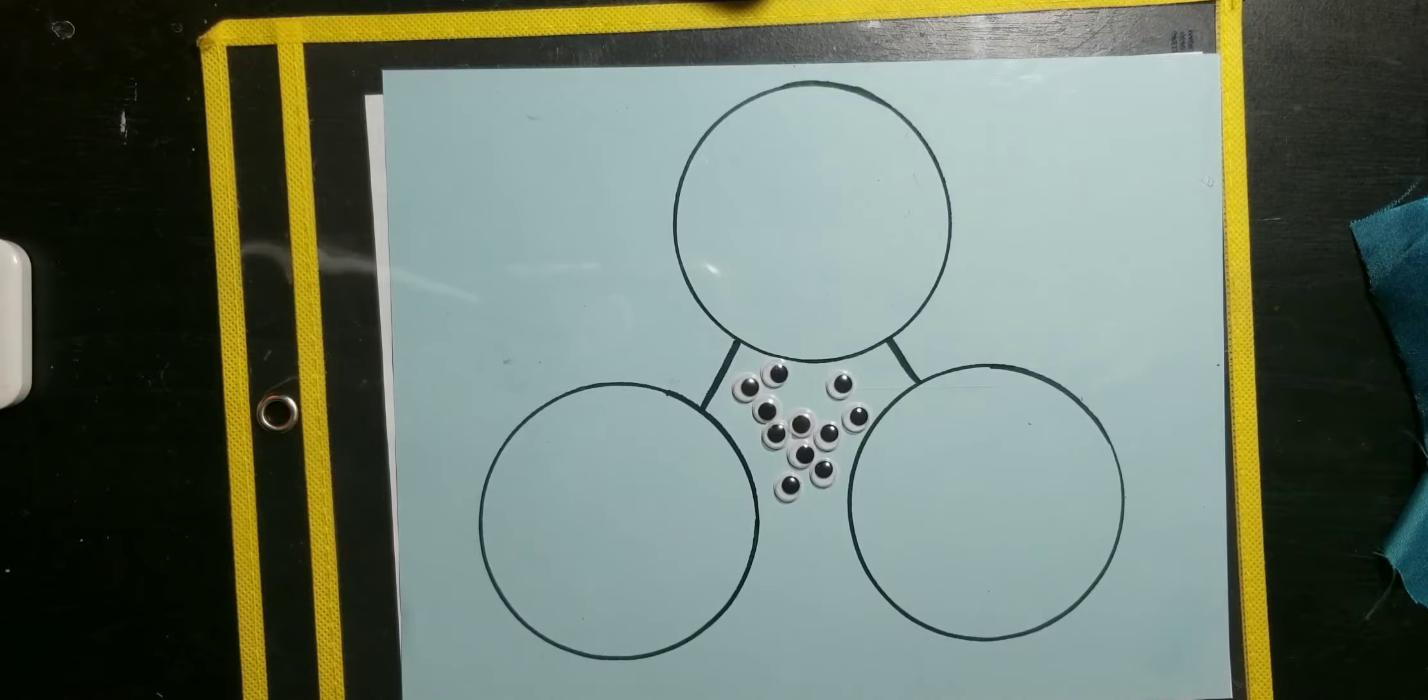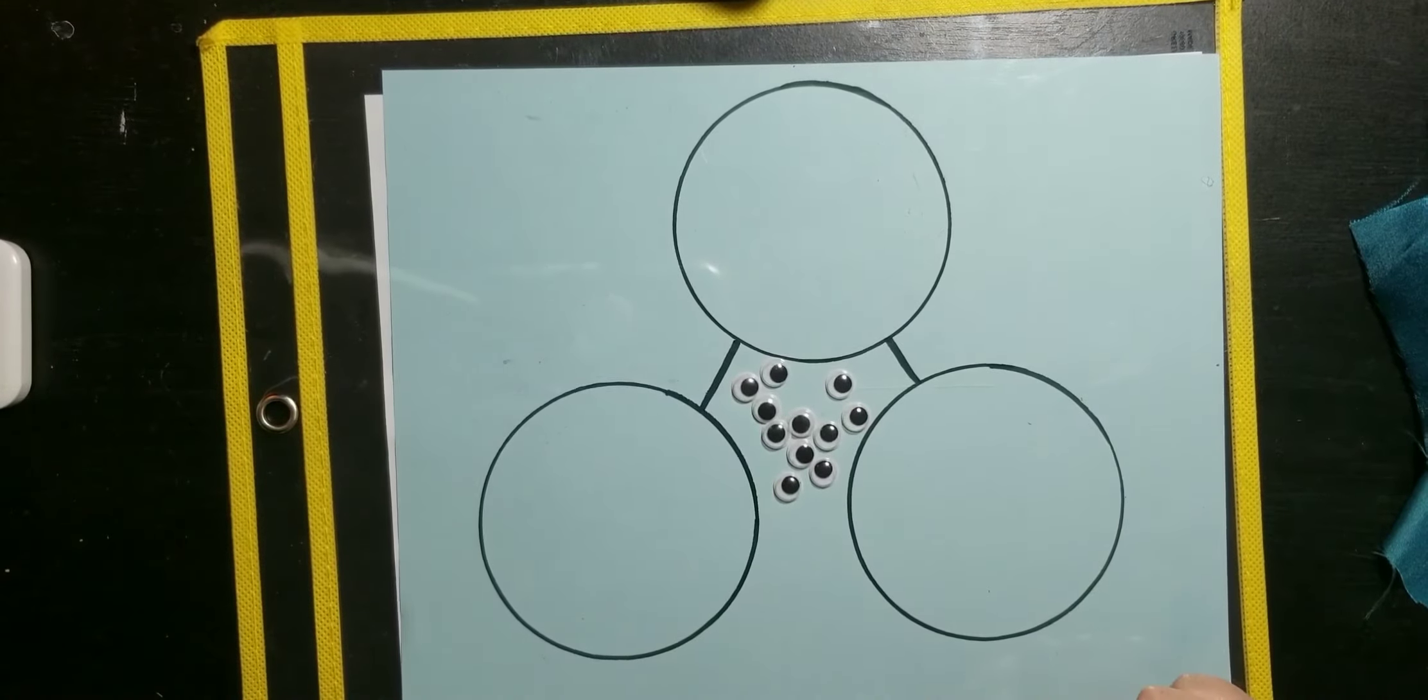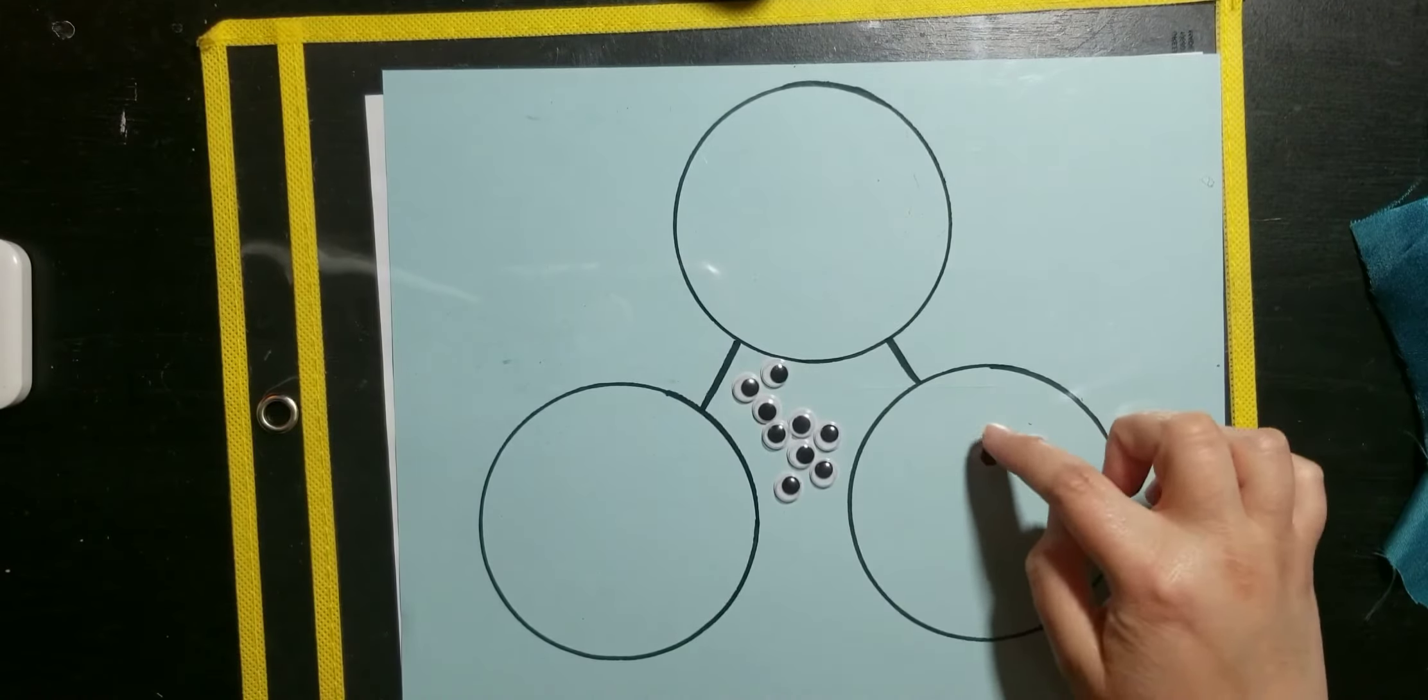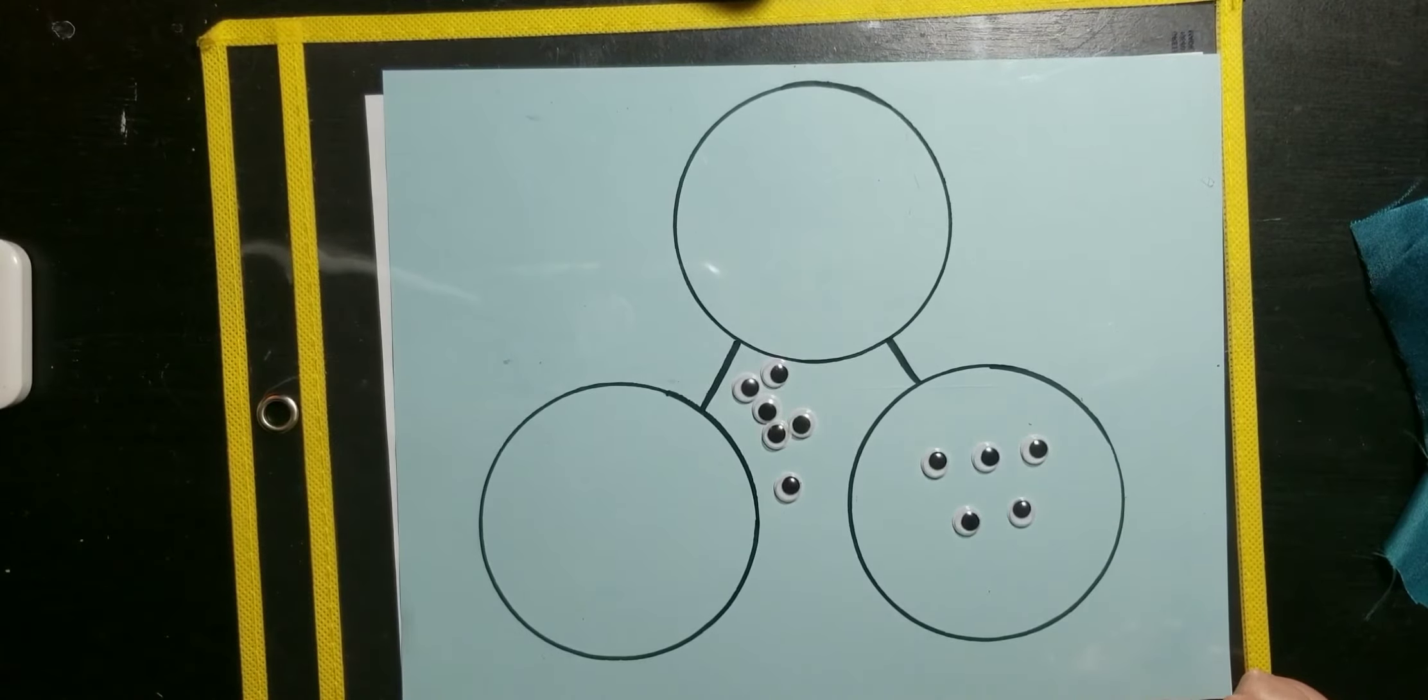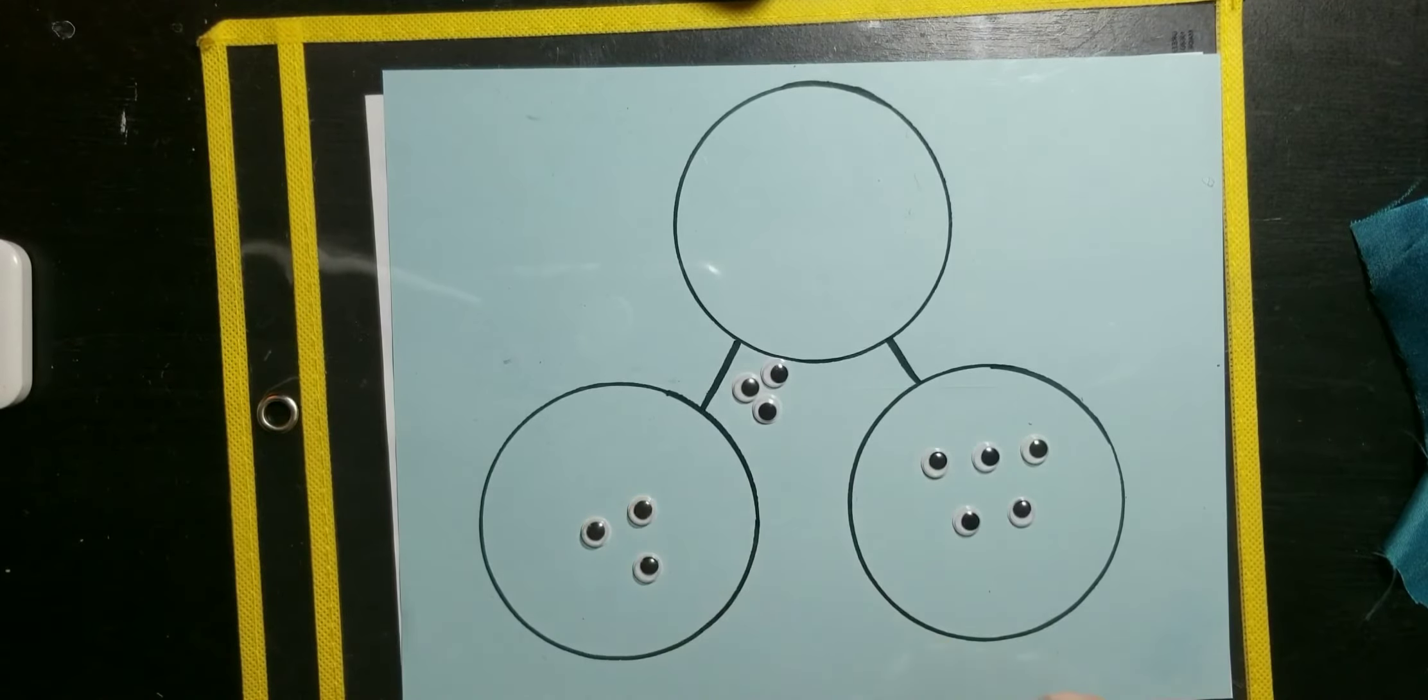Alright, I'm going to say the story problem again. And this time, we're going to put the googly eyes into the parts circle. So, the first monster I said had five googly eyes. So, let's count five eyes. One, two, three, four, and five. And the other monster had three googly eyes. So, let's count three. One, two, three eyes. And these eyes are just extra. So, I'm going to move them out of the way.